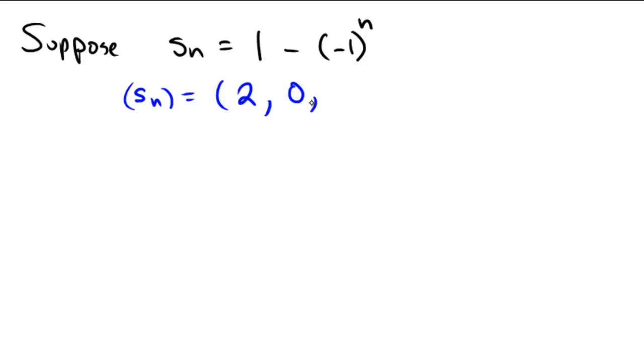If we were to stick in 3, we'd get a negative 1 again, and this would become 2, and then 0, and then 2, and then 0, and so forth. So, again, this is an oscillating sequence. It never settles down towards any particular value.